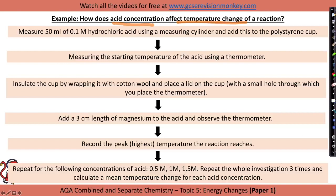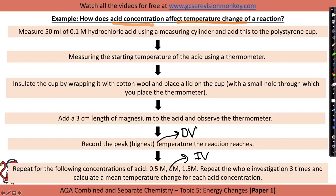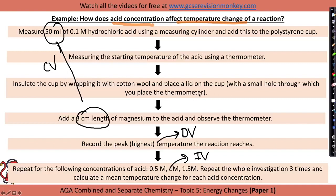Repeat the whole investigation three times and calculate a mean temperature change for each acid concentration. You should find that this is an exothermic reaction. The concentration of acid is what we are changing — this is our independent variable. We're measuring the highest temperature reached — this is our dependent variable. We use the same length of magnesium and the same volume of acid each time — these are our control variables. And we're trying to make our results more accurate by insulating the cup.